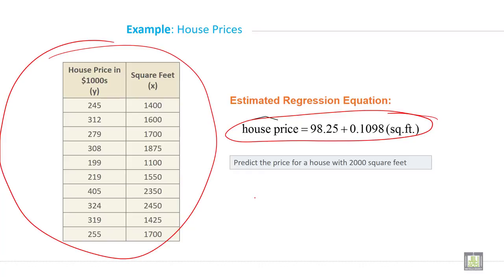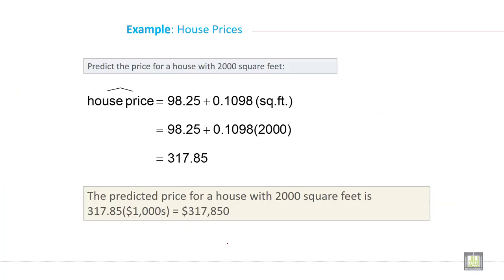So what you will do? You will do just 98.25 plus 0.1098 into 2000. You solve this and whatever you will get is the price of house.